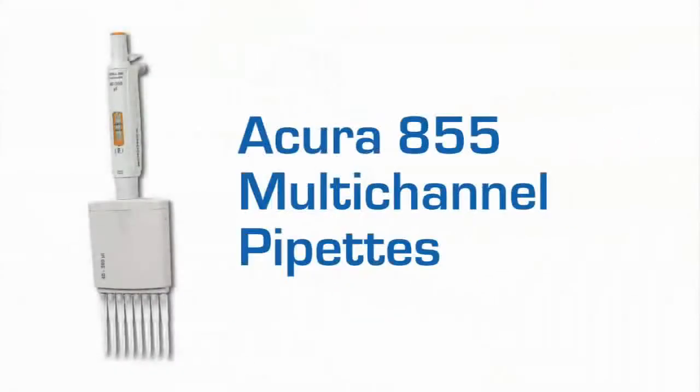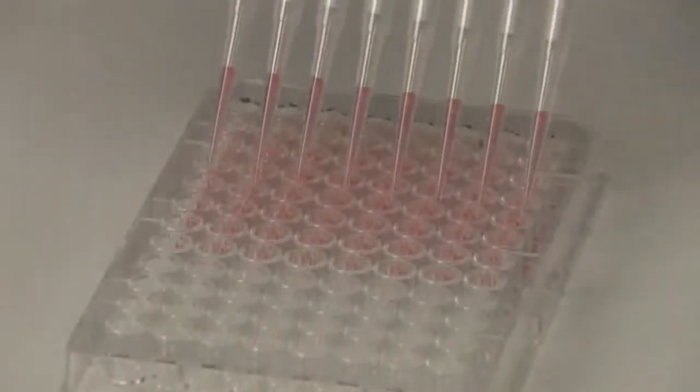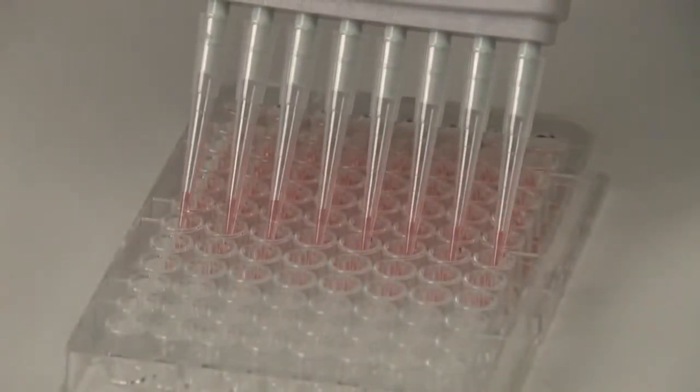The Acura Manual 855 multi-channel models come in both 8 and 12-channel models to enable high-throughput pipetting with microplates.